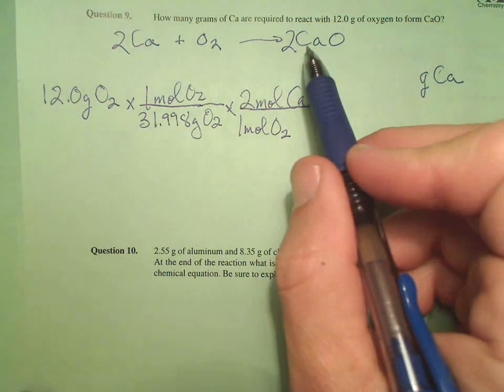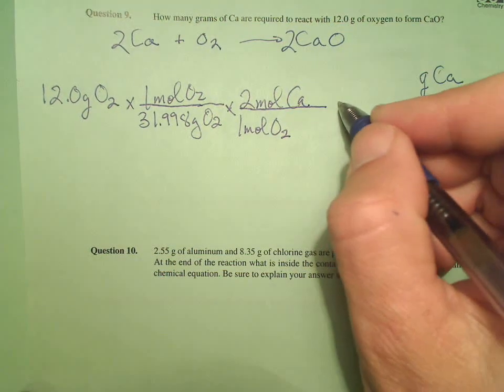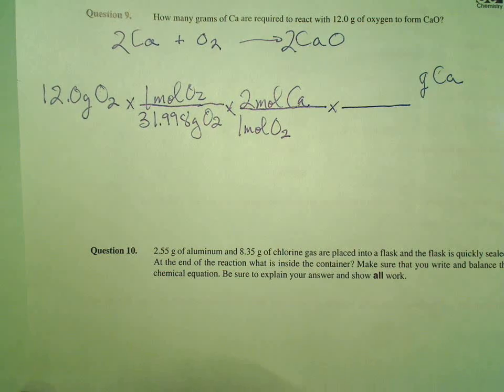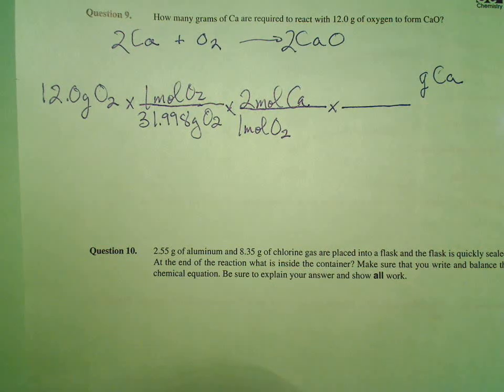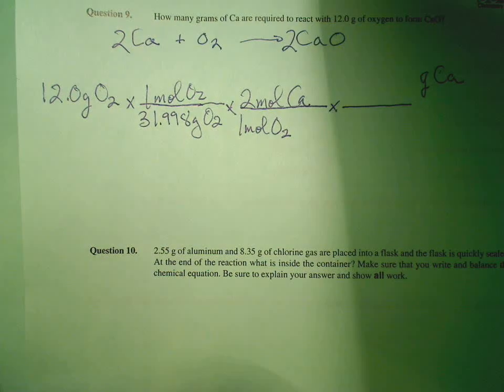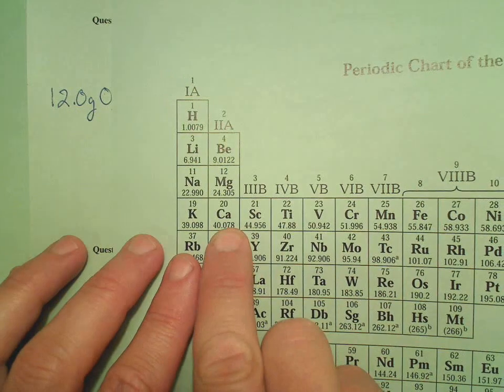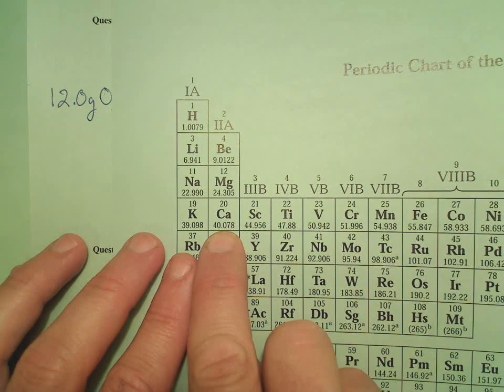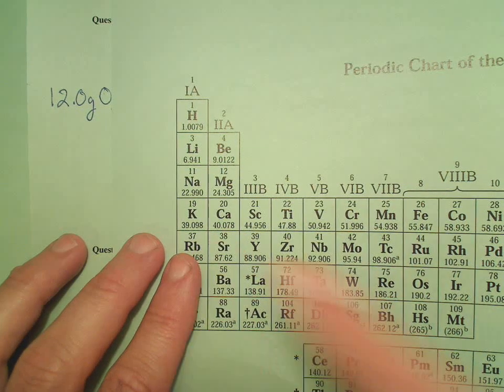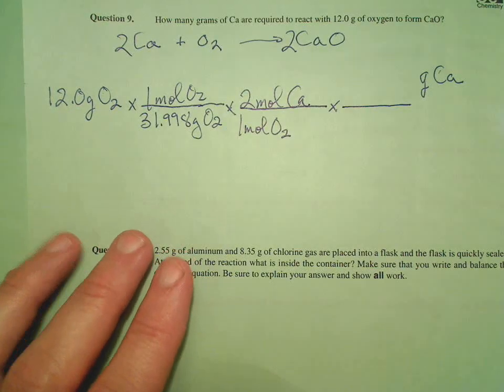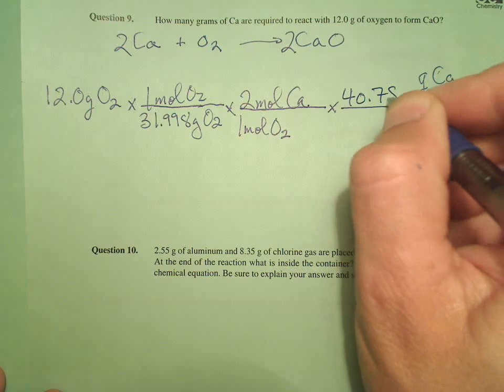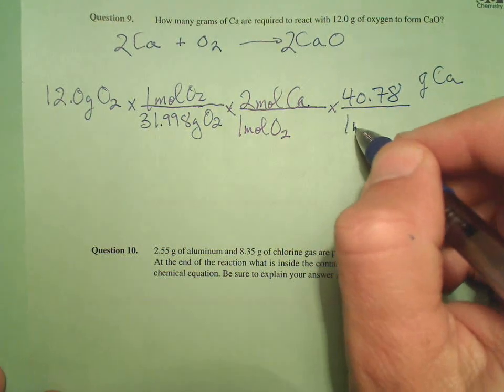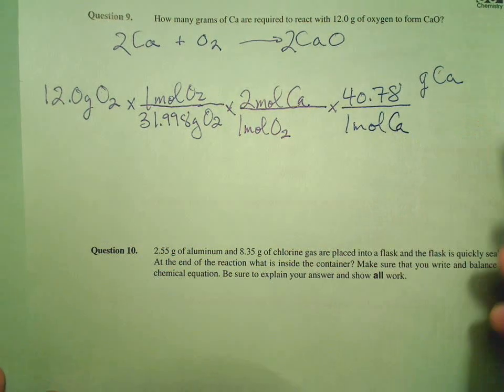Now I'm ready to move it into whatever units I'm required. So it looks like grams of calcium. Well, I can do that. In fact, I'll just reuse that. I get my handy-dandy periodic table, and it says 40.078 grams of calcium is one mole of calcium. So I know that 40.078 grams of calcium is one mole of calcium.